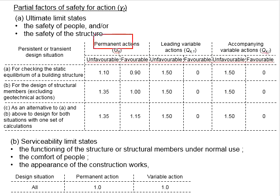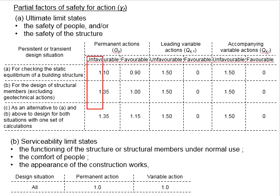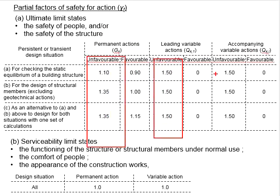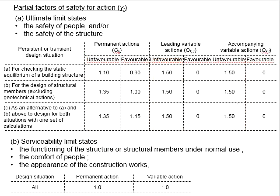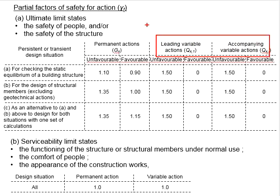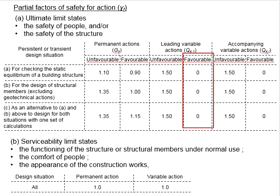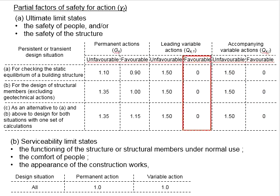As permanent actions are more easily predictable than variable actions, the factors of safety for permanent actions are normally smaller than those for variable actions. Due to the nature of variable actions — which can be present or absent — the most critical situation is when a favorable variable action is not present. Therefore the factor of safety for that case is set as zero.